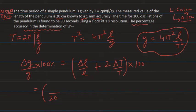The instrument's least count is 0.1 cm. The maximum absolute error in the length measurement equals the least count, so δL = 0.1 cm. We substitute this into the formula: 0.1/20 + 2 × δT/T.